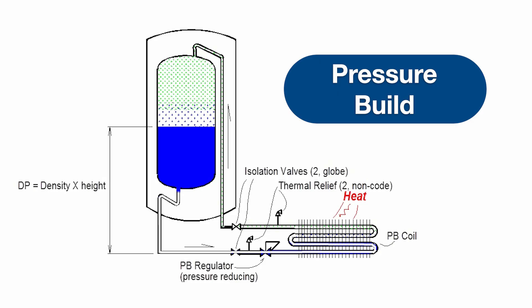When the pressure is low enough to open the PB regulator, weight of the liquid drives fluid out of the tank and through an ambient air heat exchanger, or PB coil. The PB coil adds heat to the liquid boiling it into a vapor. Liquid head continues to push the vapor into the top of the tank. The pressure building circuit thus raises the tank pressure until the pressure regulator automatically closes.